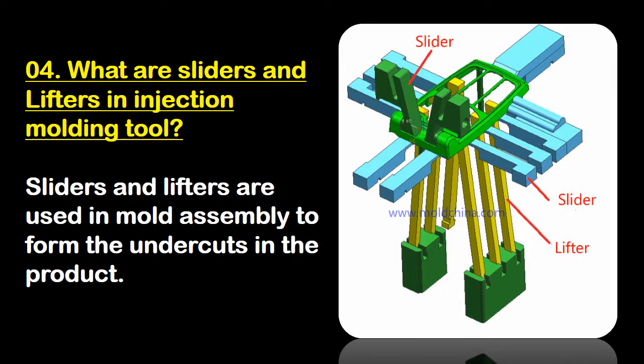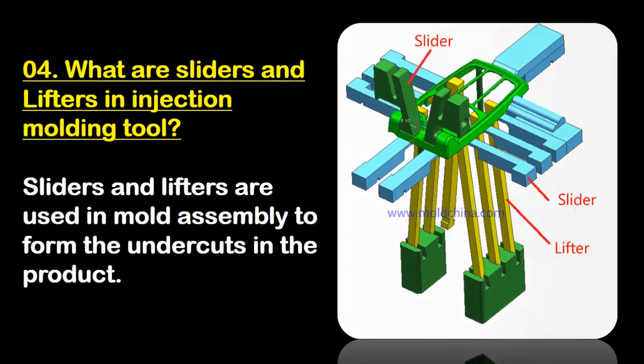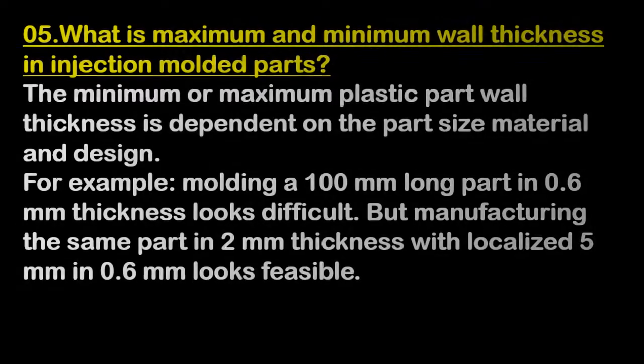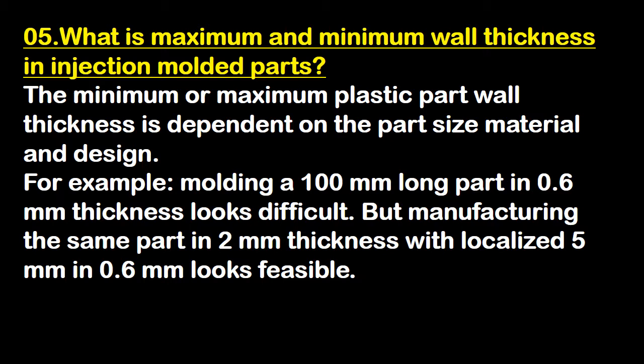What are sliders and lifters in the injection mold tool? Sliders and lifters are used in mold assembly to form the undercut in the product. What is the maximum and minimum wall thickness in an injection molded part? The maximum or minimum plastic part wall thickness is dependent on part size, material, and design. For example, molding a 100 mm long part at 0.6 mm thickness looks difficult, but manufacturing the same part at 2 mm thickness with a localized 5 mm section at 0.6 mm looks feasible.